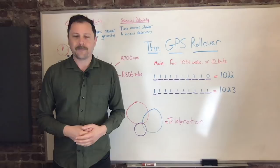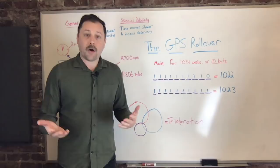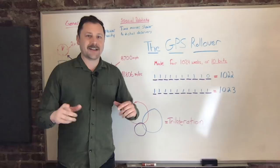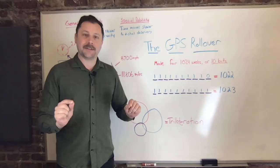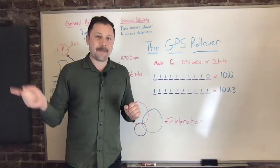So first, we have to understand what people are talking about when they're talking about a rollover. And ultimately this is because the amount of storage in the GPS satellites is 10 bits and that stores the number of weeks. We're going to get to why weeks is important and why time is so critical to GPS. But for now, let's understand the very basic elements of why this is going to happen and what it actually means.